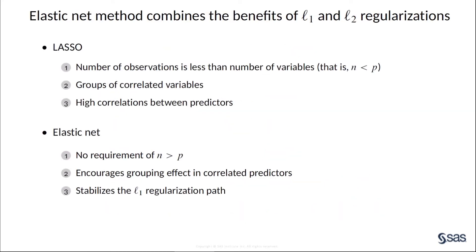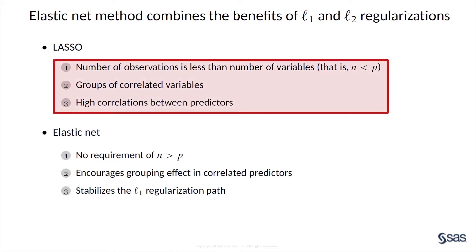Although the lasso method has been shown to be successful in many situations, it has limitations in three scenarios. First, if the number of variables is greater than the number of observations — that is, N is less than P — or if the number of important variables is expected to be greater than N, the lasso can select at most N variables before it saturates, and the model might perform poorly. Second, when there are groups of correlated variables, the lasso tends to randomly select only one variable from a group and ignore all of the others.